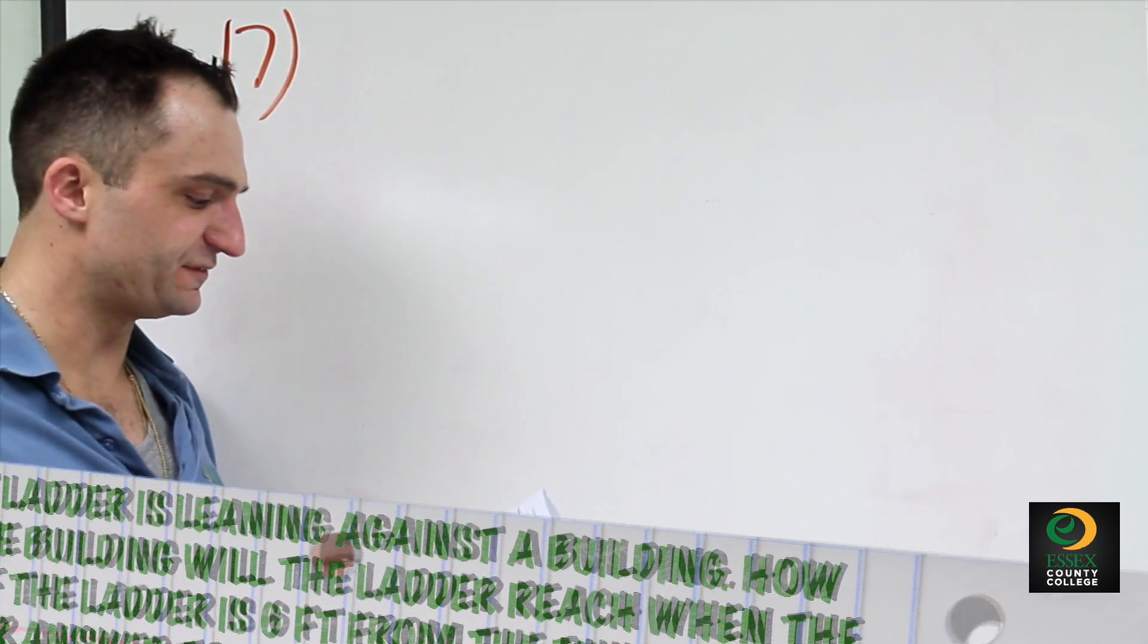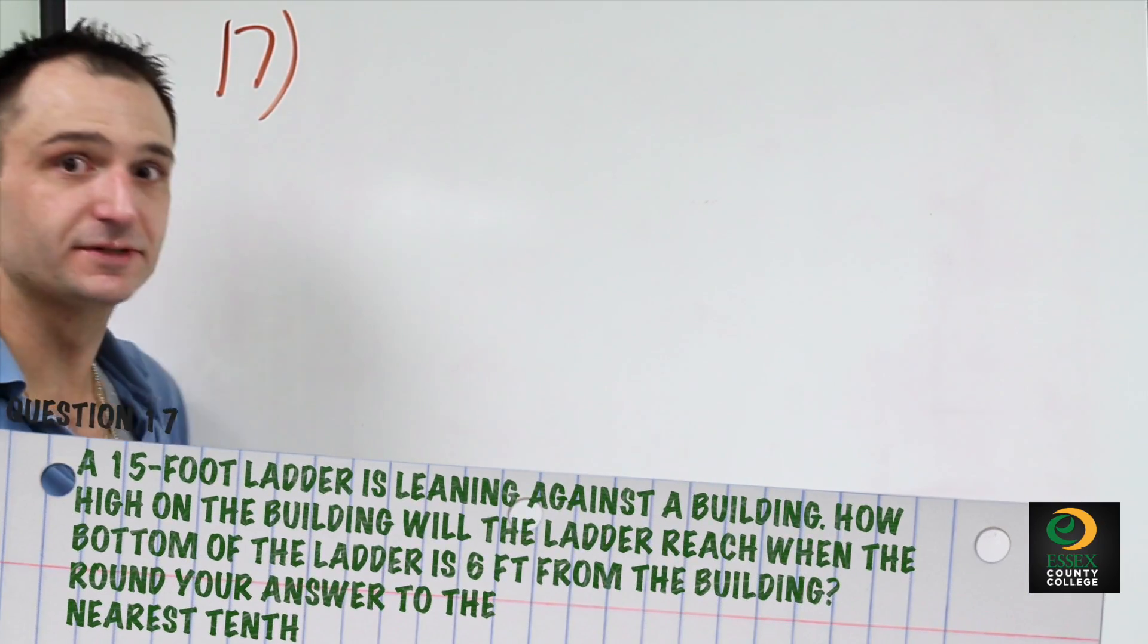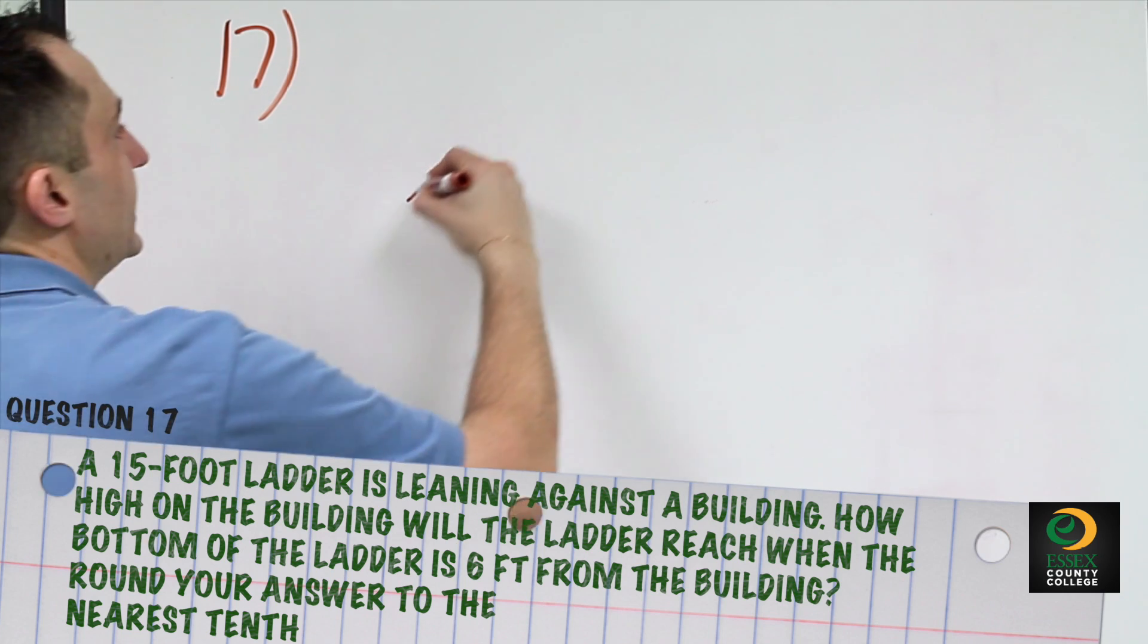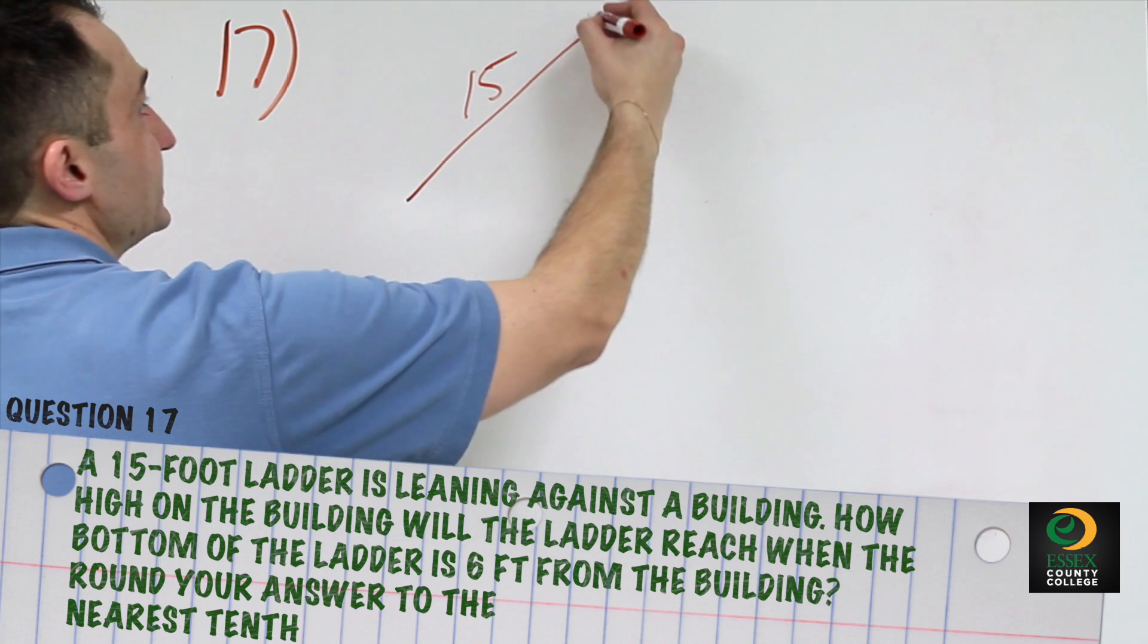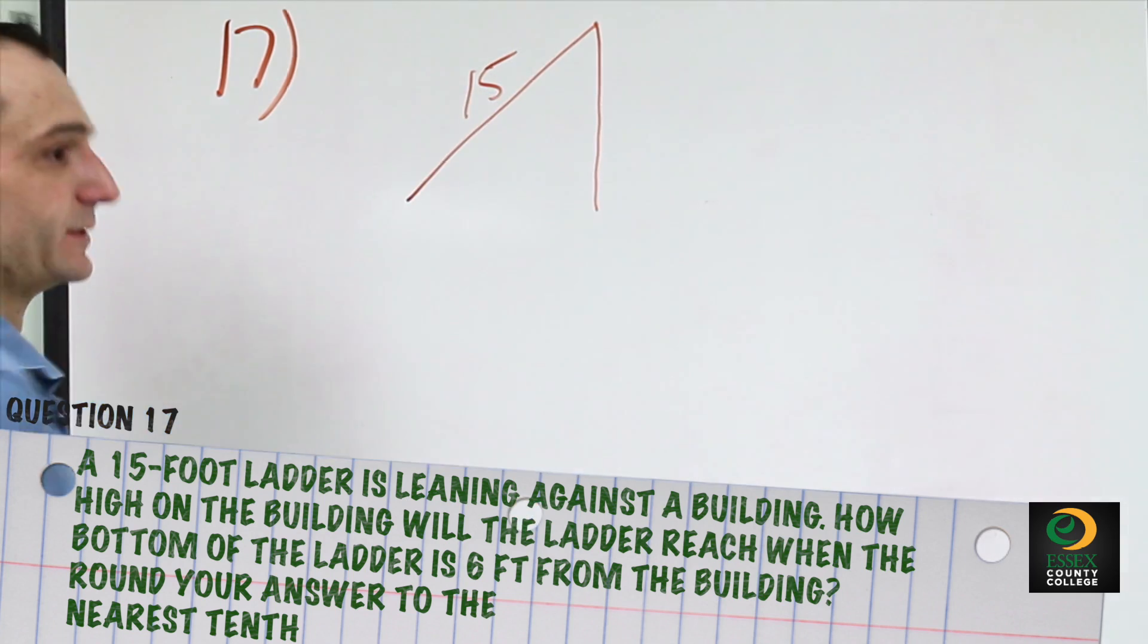Problem number 17 states a 15-foot ladder is leaning against the building. So here's our ladder. It's 15 feet and is leaning against the building. And there's our building.